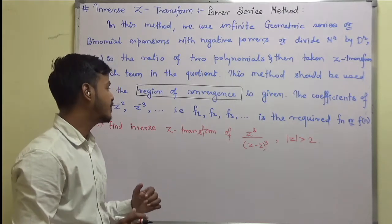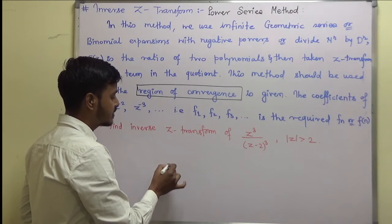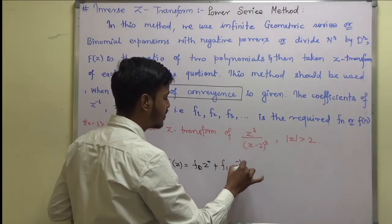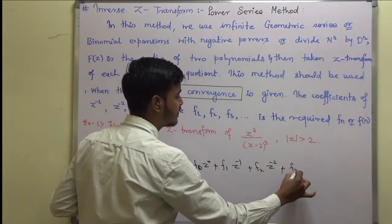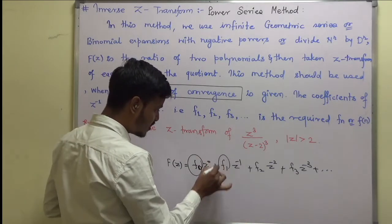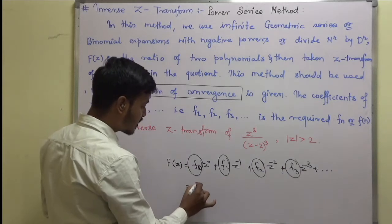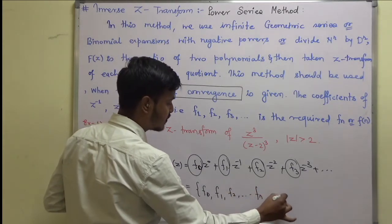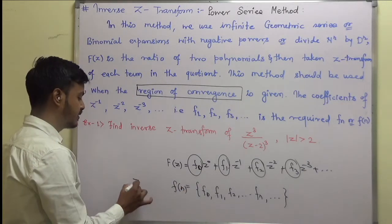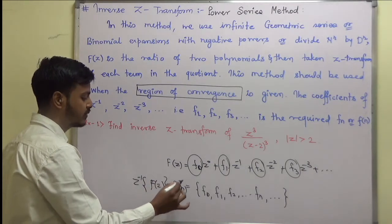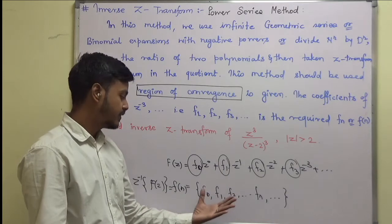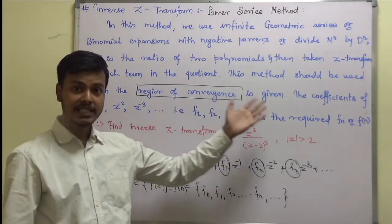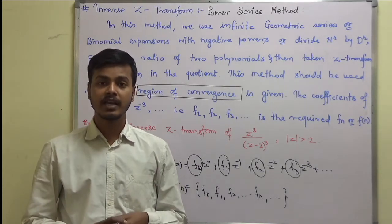Our objective is to get the sequence. Sometimes we get f(z) as f(0)·z⁰ plus f(1)·z⁻¹ plus f(2)·z⁻² plus f(3)·z⁻³ and so on. All these coefficients form a sequence f(0), f(1), f(2), f(n), and so on. This sequence is what we want — the inverse Z transform f(n). Sometimes we write the solution by looking at the binomial expansion and writing down its general term as the answer.